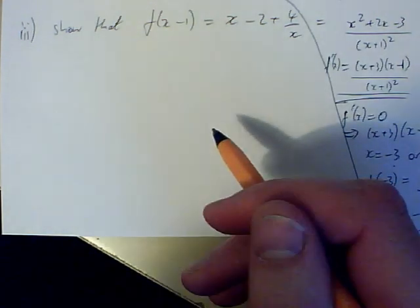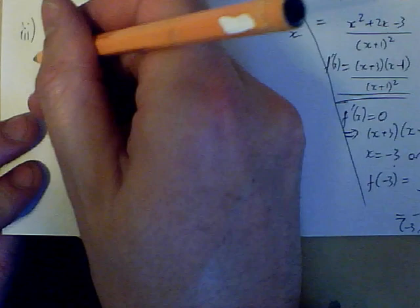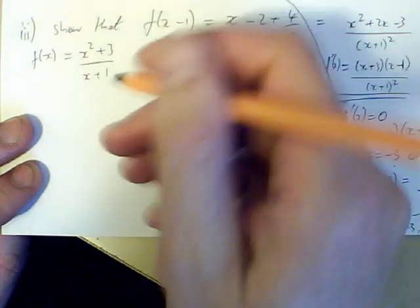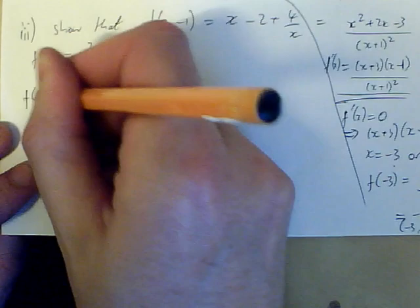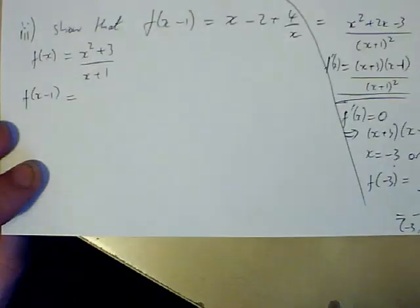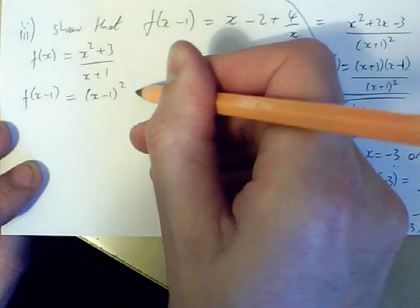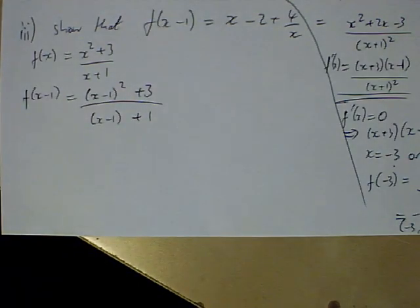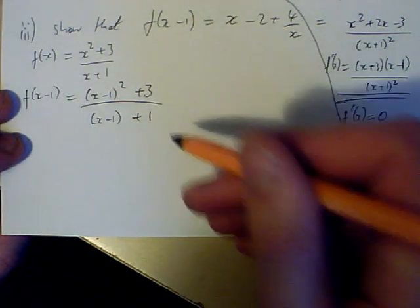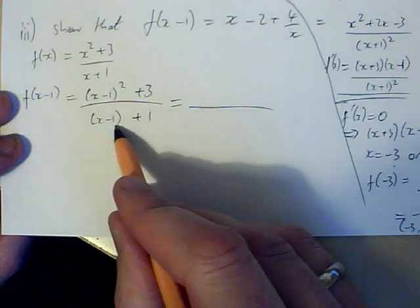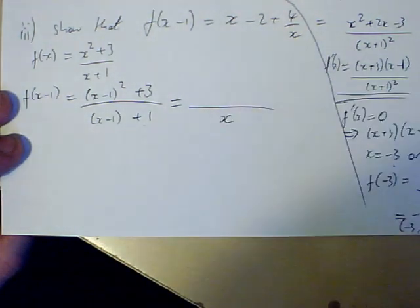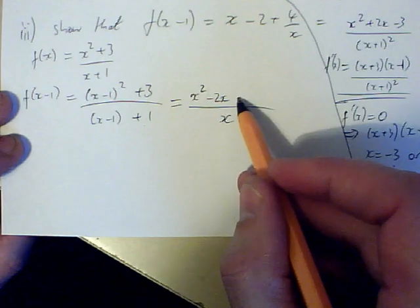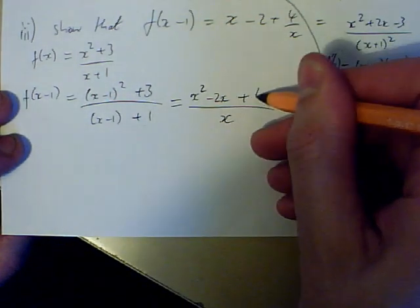Part 3 wants me to show that f of x minus 1 is x minus 2 plus 4 over x. So, this is testing that we can put x minus 1 into the original f of x in place of x and simplify it really down to this thing here. So, it's a bit of algebraic rearrangement. First of all, I'll write down what f of x is because you can't see that in this view. And then I'm going to replace all the x's with x minus 1. Okay, here we go.